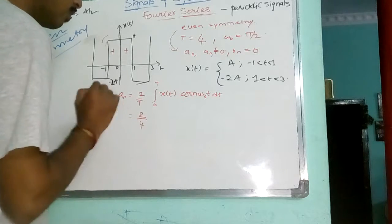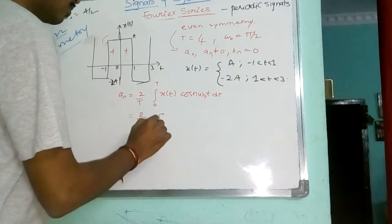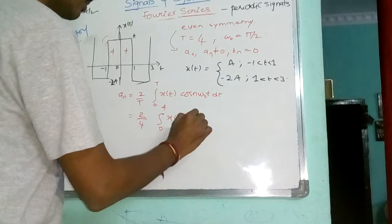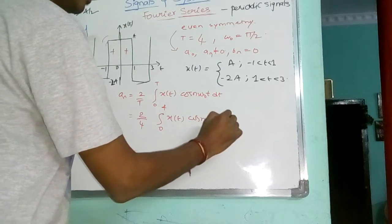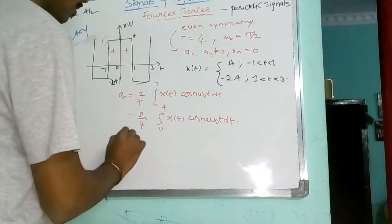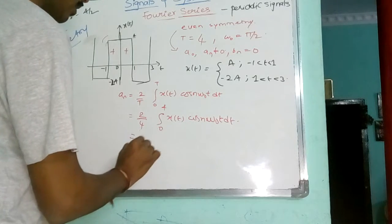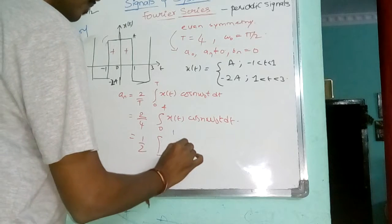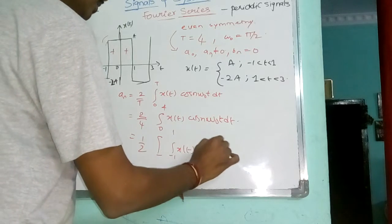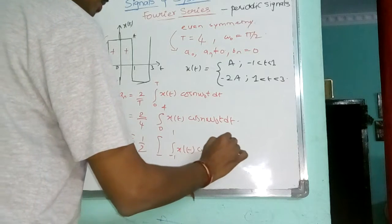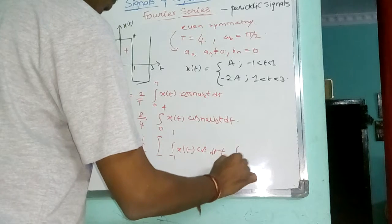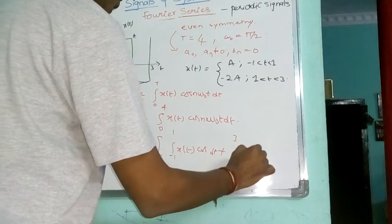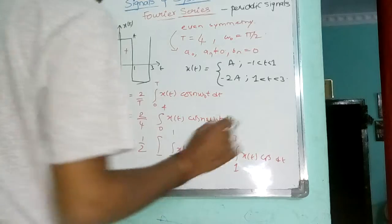This is 1 by 2 into, minus 1 to 1, x of T, cos, plus DT, and then 1 to 3, x of T, cos DT. Now, this is given by 1 by 2, integral. This is A, from minus 1 to 1, cos N omega 0 T DT, plus 1 to 3, minus 2A, cos N omega 0 T, DT.